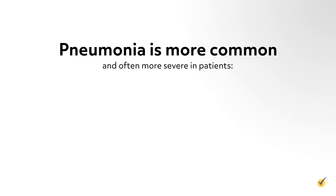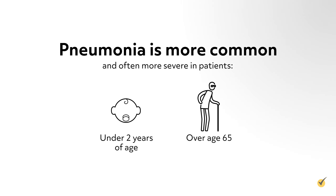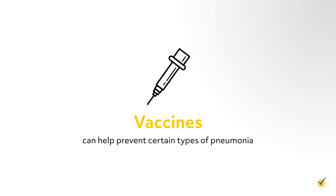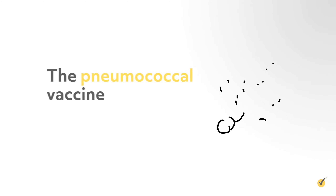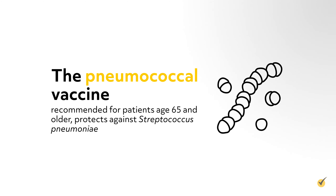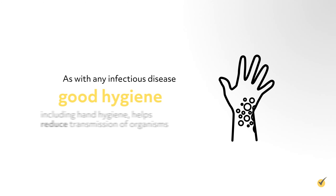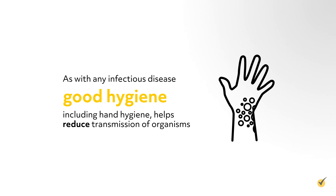Pneumonia is more common and often more severe in patients under 2 years of age or over age 65. Vaccines can help prevent certain types of pneumonia. The pneumococcal vaccine, recommended for patients age 65 and older, protects against Streptococcus pneumoniae. The influenza vaccine reduces the risk of pneumonia due to the influenza virus. As with any infectious disease, good hygiene — including hand hygiene — helps reduce transmission of organisms.